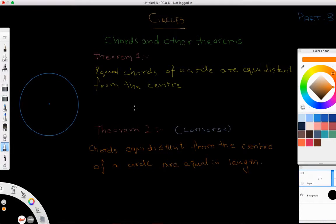The first theorem we're going to discuss today: equal chords of a circle are equidistant from the center.